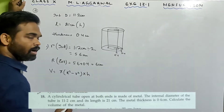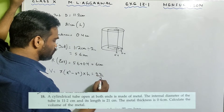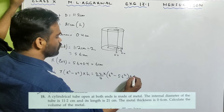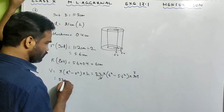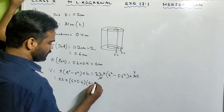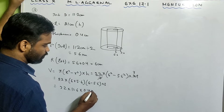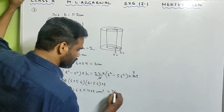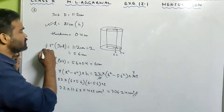Volume formula: area of cross section = π(R² − r²) × height. Substitute the values: 22/7 × (6² − 5.6²) × 21. Using a² − b² = (a+b)(a−b), that becomes 22 × 11.6 × 0.4 × 3, which equals 306.24 centimeter cube. That's the answer.